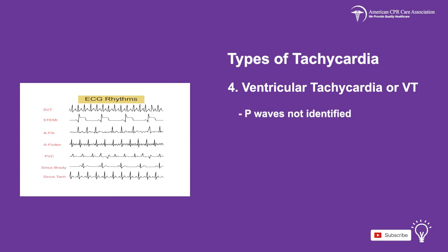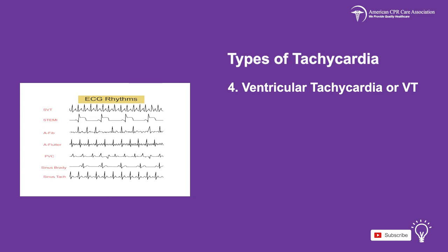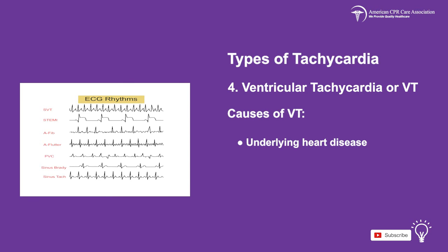In VT, the P waves cannot be identified, while the T waves are opposite in polarity to the QRS complex. Some causes of VT include drug toxicity, prolonged QT syndrome, myocarditis, underlying heart disease, and electrolyte disturbances.